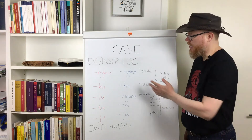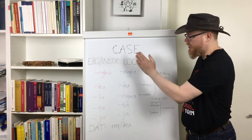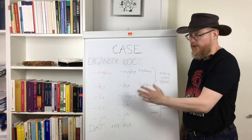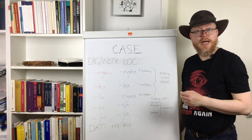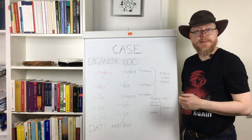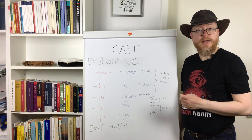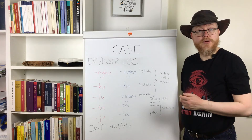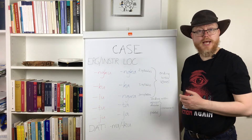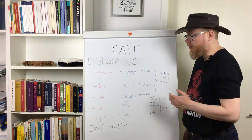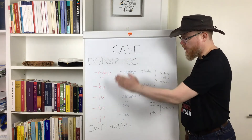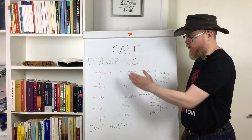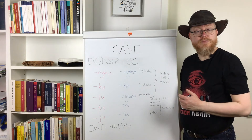So these here are the ergative and the locative allomorphs in Ngara. Ergative and locative allomorphs are related in Pama-Nyungan languages, as you can see, with the ergative allomorphs ending in 'u' and the locative ones in 'a'.